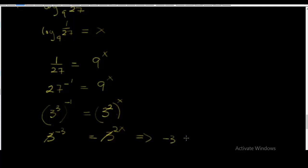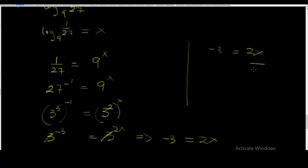From −3 = 2x, divide both sides by 2. The 2s cancel, giving x = −3/2. Therefore, x is equal to minus 3 over 2.